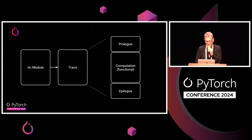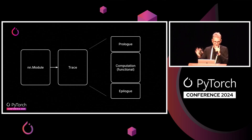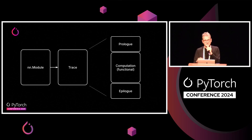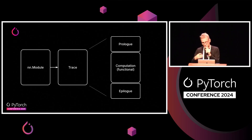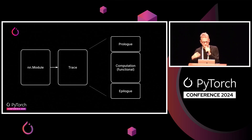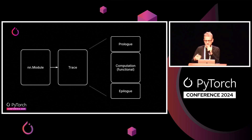Then the trace — how the trace is composed — you go from NN module, which is an object-oriented type of thing with state, stateful. And so we decompose it into a prolog, which goes from object-oriented to functional and other things. It does checks to invalidate the cache so you don't re-execute with the Python interpreter written in Python, because it's fairly slow. So we cache a lot of things and the prolog needs to understand if the computation that was captured is still valid or not. And then the computation, which is a purely functional expression of what's happening in your model.